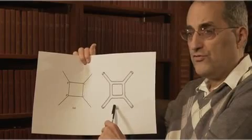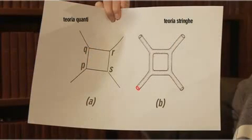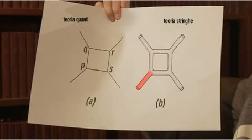Here's the equivalent picture in string theory. First of all, a point particle has been replaced by a little loop of string. So a line representing the path of a point particle in space has been replaced by a little tube. And unlike lines which branch or rejoin at definite moments where something happens, the tubes can join in a completely smooth fashion. So while this is a traditional Feynman diagram, this is the equivalent in string theory.